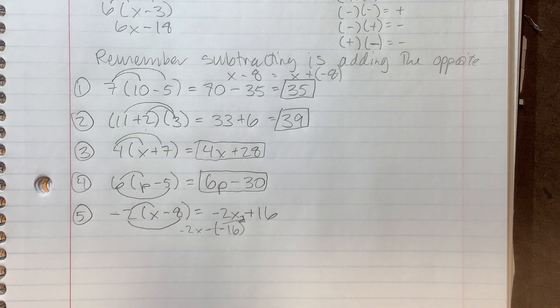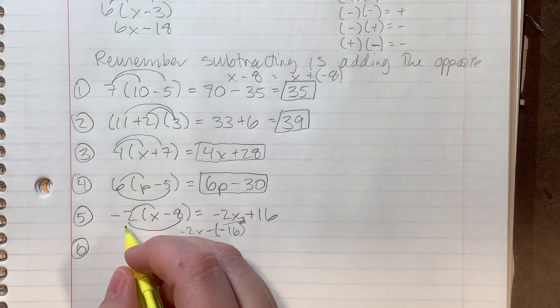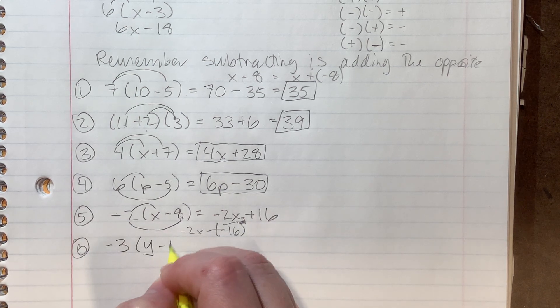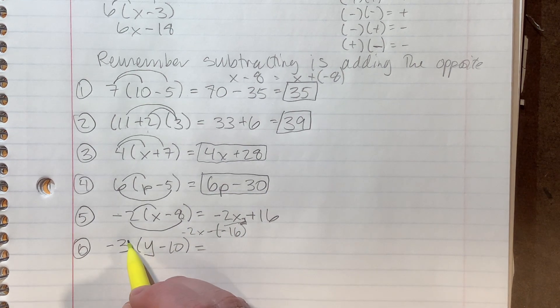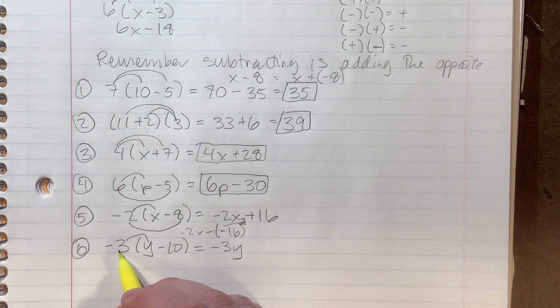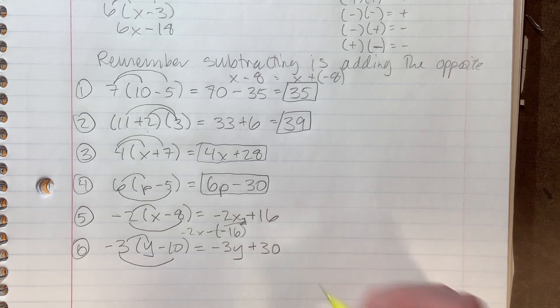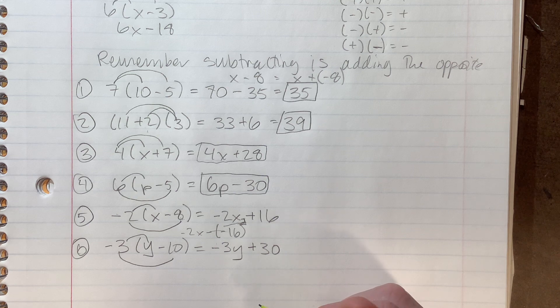Let's try another one with a negative on the outside. Negative three times y minus 10. We're just going to try this again. So negative three times y is negative three y. And negative three times negative 10 is positive 30. So hopefully that makes sense to you.